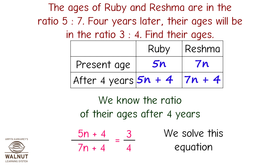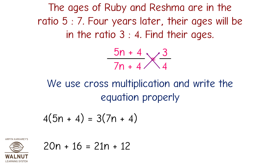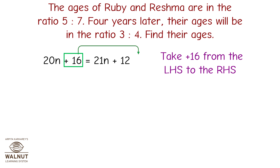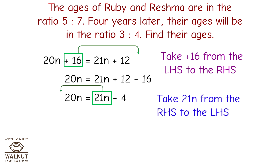Let us solve this equation using cross multiplication. We get 4 multiplied by 5n plus 4 equals 3 multiplied by 7n plus 4. Therefore 20n plus 16 equals 21n plus 12. Transposing: 20n equals 21n plus 12 minus 16, so 20n equals 21n minus 4. Taking 21n to the LHS: 20n minus 21n equals minus 4.